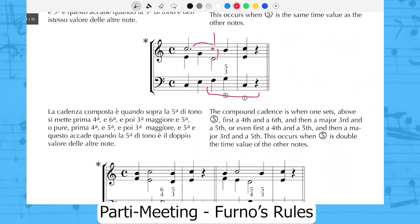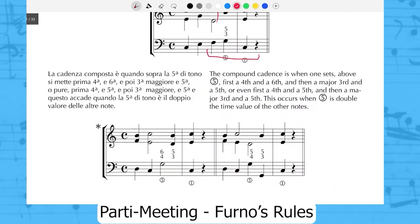Let's play only this cadence for listening to it. Perfect. The compound cadence is when one sets above scale degree five first a fourth and a sixth, and then a major third and a fifth, or even first a fourth and a fifth and then a major third and a fifth. This occurs when scale degree five is double the time value of the other notes.